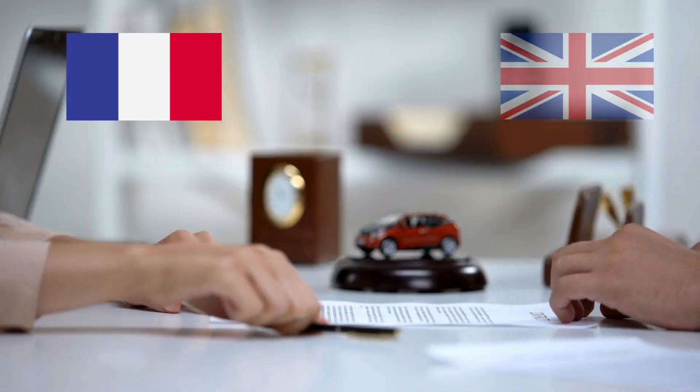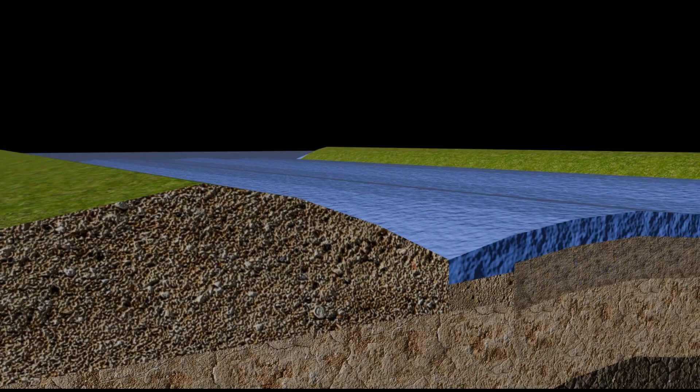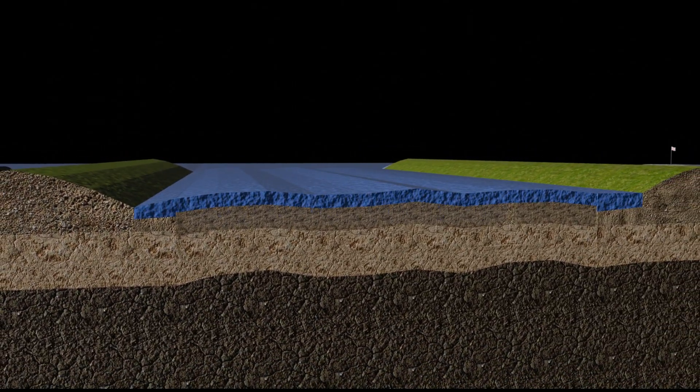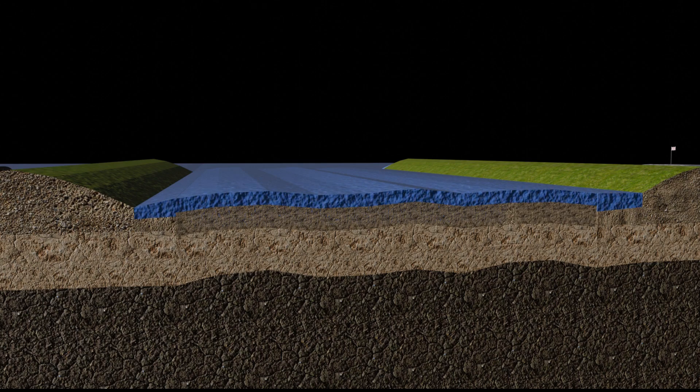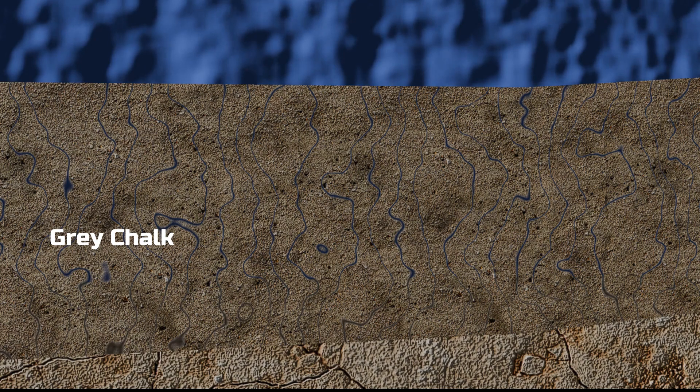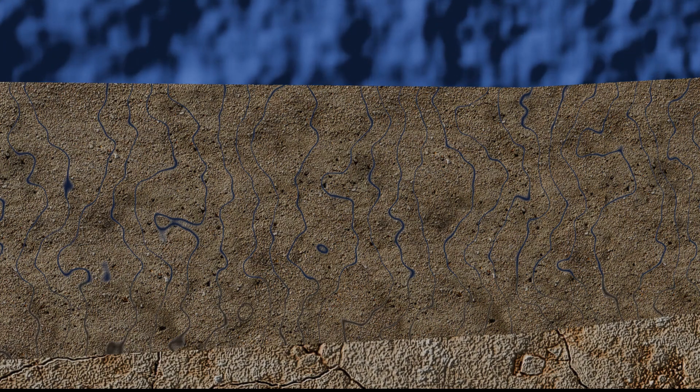After an agreement between the UK and French governments, a geological investigation was conducted. The study revealed multiple layers of soil beneath the seabed. The topmost layer was composed of grey chalk, which contained numerous cracks due to water infiltration, making it unsuitable for tunneling.